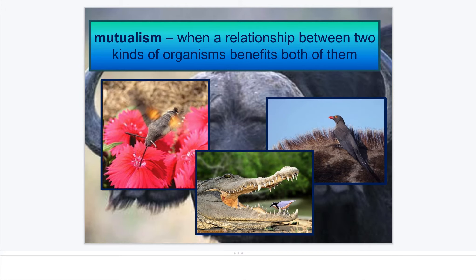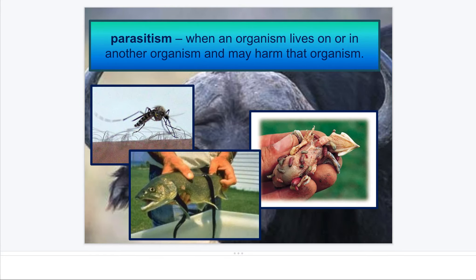But sometimes that is not working out so well. One relationship that's not as positive is parasitism. That's when an organism lives on or in another organism and can harm it. You can see in the pictures — just like a mosquito on our skin — it's helping the mosquito but it's not helping us.